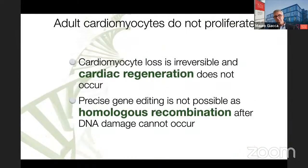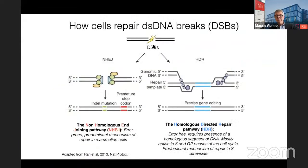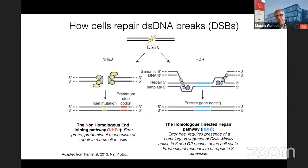The second consequence of the post-mitotic state of cardiomyocytes is that they don't spontaneously perform homologous recombination. So if there is a double-strand DNA break, the only repair pathway is non-homologous end-joining, not homologous recombination, because homologous recombination requires proteins expressed during S phase — RAD51, RAD50, MBS1, MRE11, MDC1 — and these proteins are not expressed in post-mitotic cells. Therefore, precise gene editing, meaning precise correction of genetic defects, cannot occur.